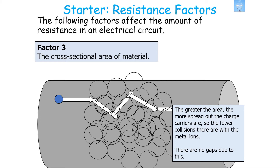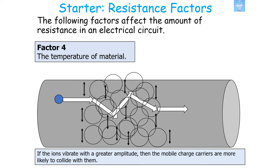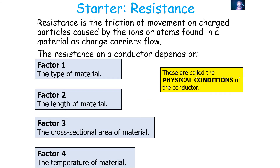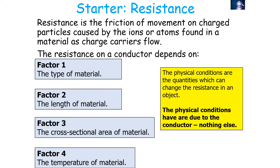It's important to note that some people have the misconception that a larger cross-sectional area changes resistance because there's more space between the metal ions — that is not correct. There are no gaps if you make a material have a larger cross-sectional area. The final factor is the temperature of the material: if the ions vibrate with a greater amplitude, the mobile charge carriers are more likely to collide with them. These are called the physical conditions of the conductor — the quantities which can change the resistance in an object, and they are due to the conductor and nothing else.